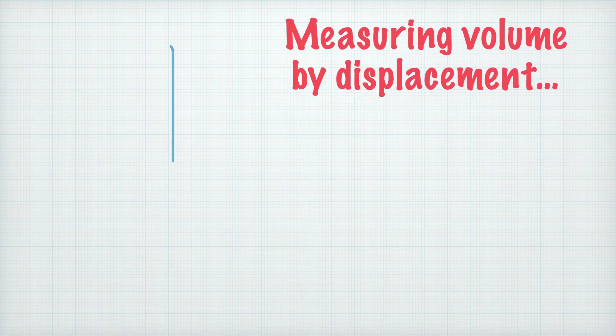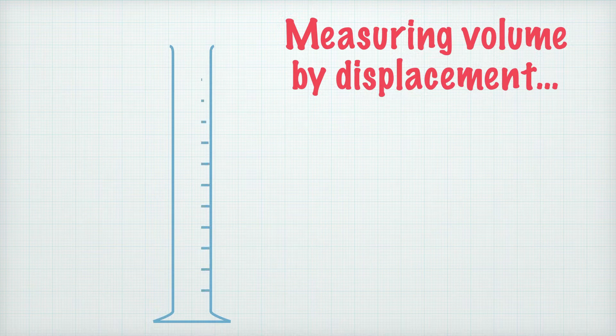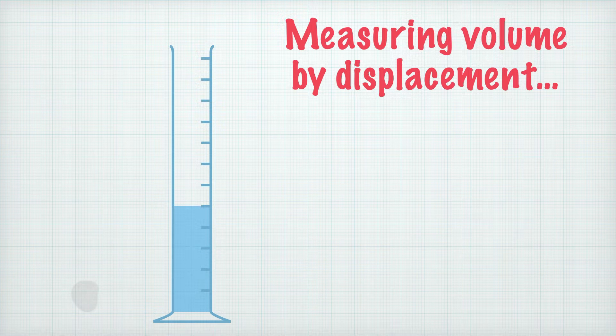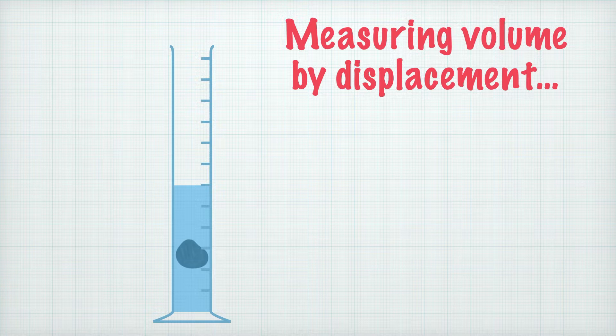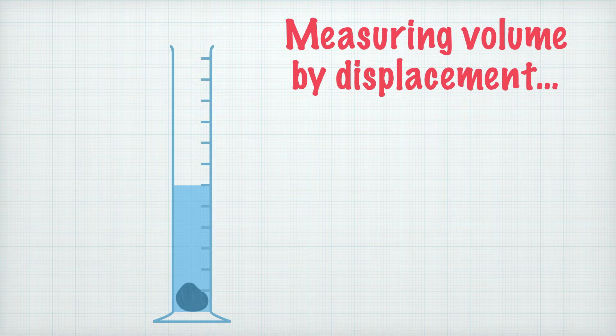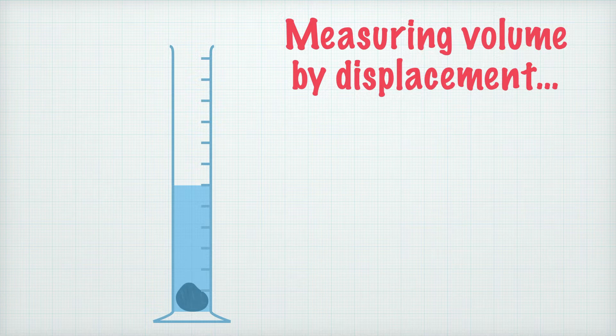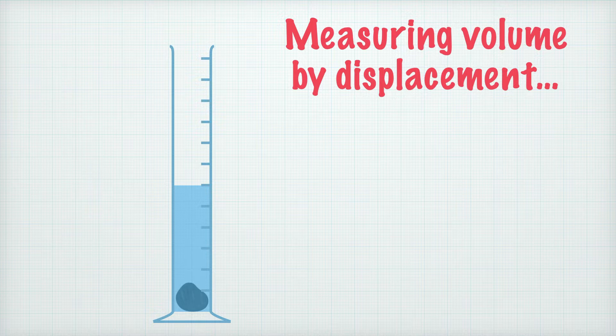We can take a measuring cylinder like this one here, then pour some water in it like so. When we take the stone and drop it into the measuring cylinder, the water level rises because the stone pushes some of the water out of the way. In other words, the stone displaces some of the water.